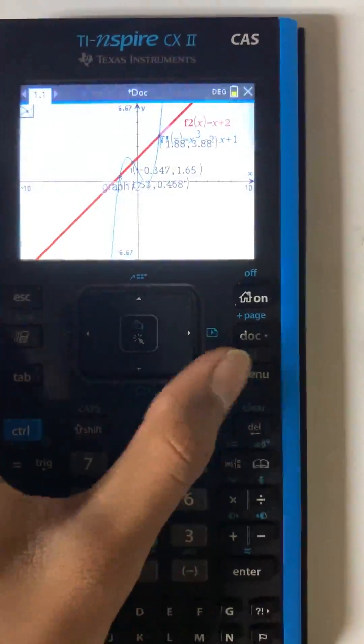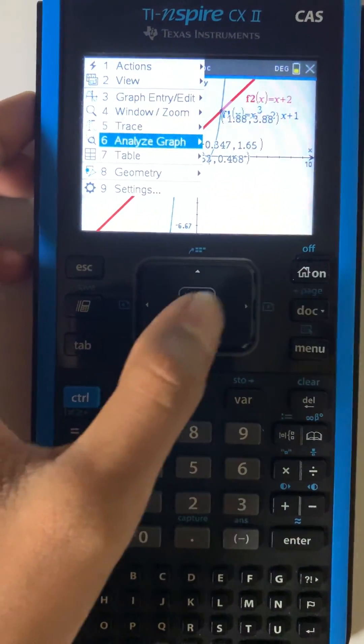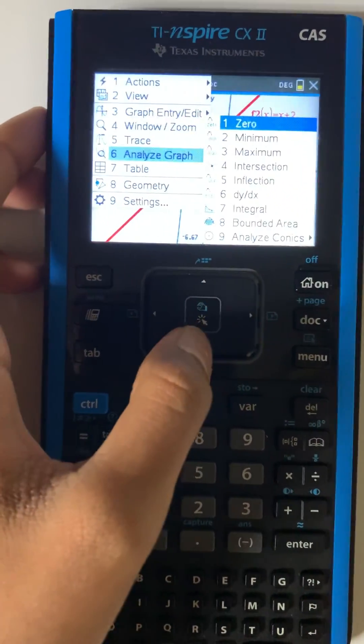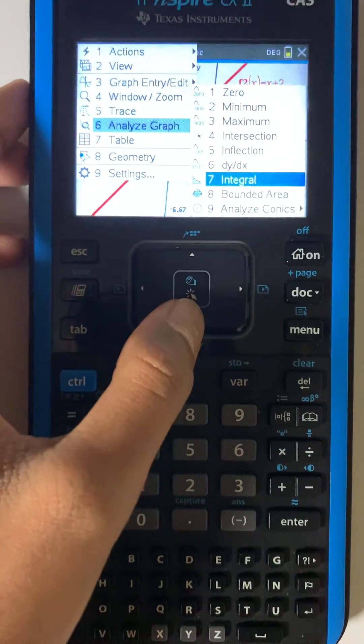The third step will go to menu, press on analyze graph, and go to bounded area.